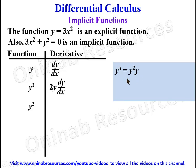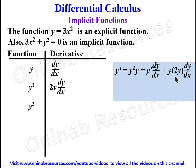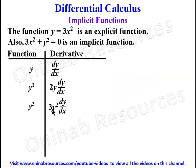For y³, we look at it as y²·y and again apply the product rule. We hold the first function y², differentiate y to get dy/dx, then hold y and differentiate y², whose derivative is 2y·dy/dx. So y times 2y gives 2y², adding to y² gives 3y², then multiplied by dy/dx. That is the derivative of y³. Continuing this pattern up to y^n, the derivative is n·y^(n−1)·dy/dx — multiply by the power and reduce the power by 1.